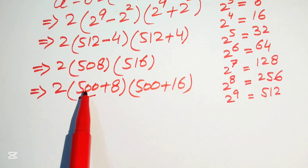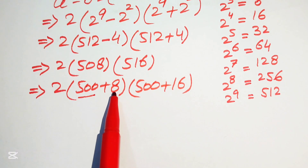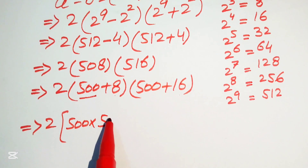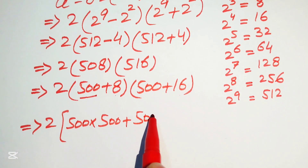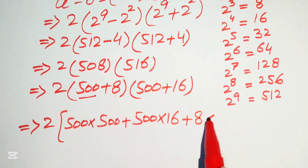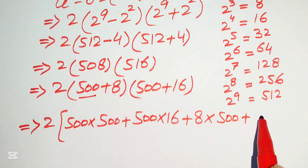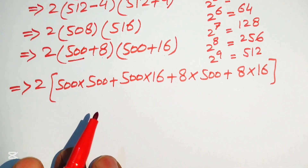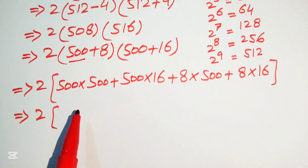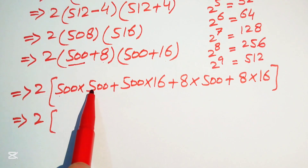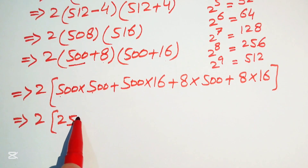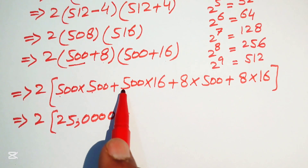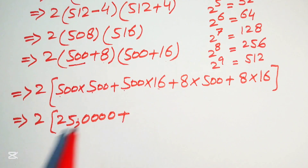Since a calculator is not allowed, we multiply term by term. We write 508 as 500 plus 8 and 516 as 500 plus 16. We first multiply 500 by both terms, then multiply 8 by both terms. This gives us: 2 times (500 times 500, plus 500 times 16, plus 8 times 500, plus 8 times 16).